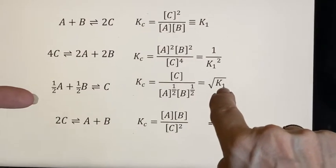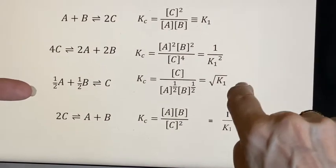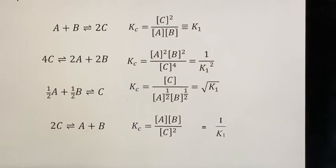So here it is in the same order, but all of the exponents have been halved. In other words, it is still K sub one, but it's been square rooted, K sub one to the one half power.